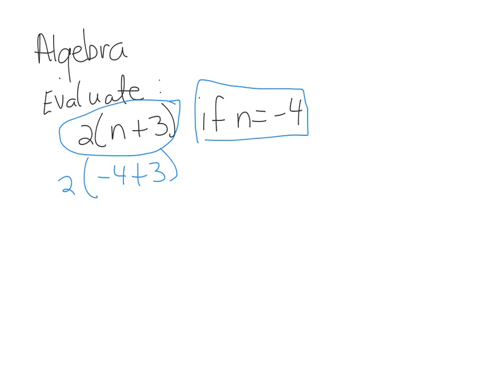Now this is order of operations, so you work inside the parentheses. So circle tells you something's happening, negative 4 plus 3. These are your negative rules, so they're opposite, so you subtract them, and then 4 takes it, so it's negative 1 times 2. So 2 times negative 1 is negative 2.